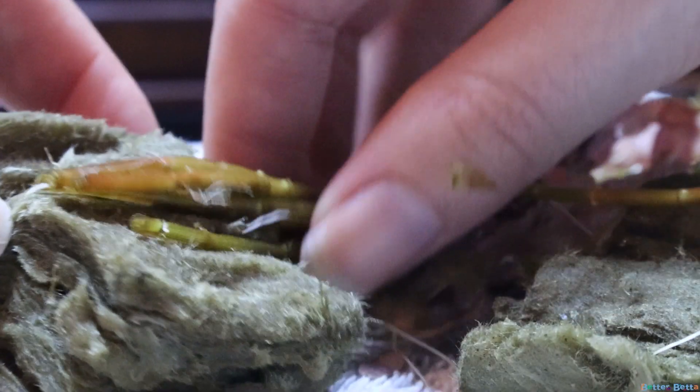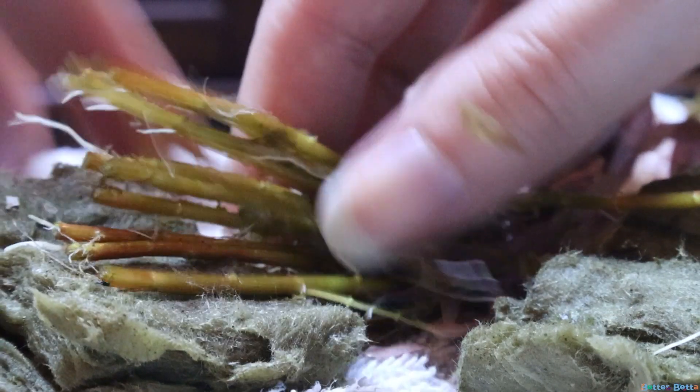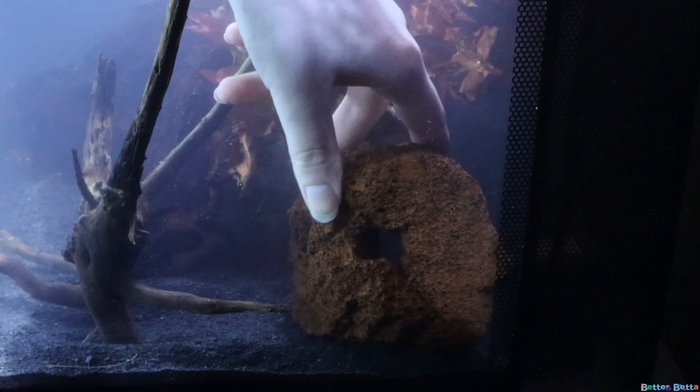Now going back to the plant that I pulled out in the beginning, I wish I knew what it was called, but it was not labeled in the local fish store I went to. I just picked it up because it was pretty and hoped for the best. So I am going ahead and planting it in the back of my tank because it is very tall already. Next I am adding back the lava rock that I took out at the beginning.